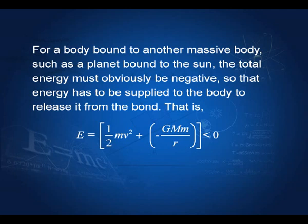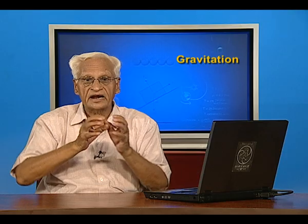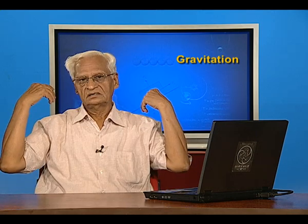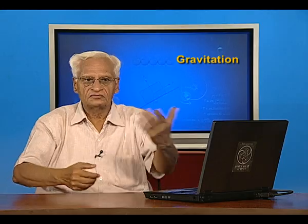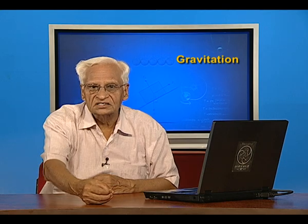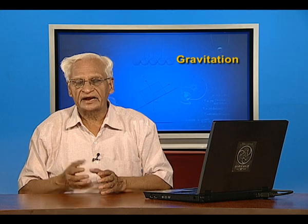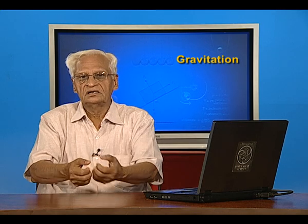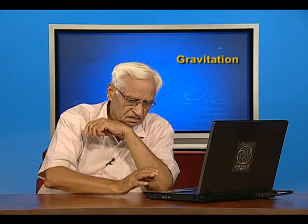For a body bound to another massive body, such as a planet bound to the sun, the total energy must be negative — we need to do work to remove this body from the gravitational potential. The total energy E equals half mv squared plus potential energy minus GMm by r, and the sum must be less than zero for the particle to be bound. For example, for the earth to be bound to the sun, the total energy must be negative, so energy is required to remove it from the sun's influence.